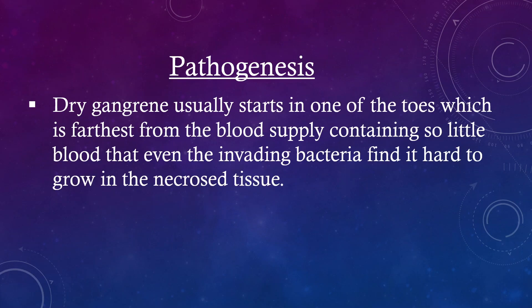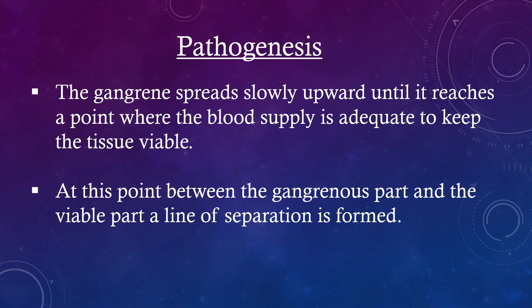Pathogenesis: Dry gangrene usually starts in one of the toes which is farthest from the blood supply, containing so little blood that even the putrefying bacteria find it hard to grow in the necrosed tissue. The gangrene spreads slowly upward until it reaches a point where the blood supply is adequate to keep the tissue viable. At this point, between the gangrenous part and the viable part, a line of separation is formed.